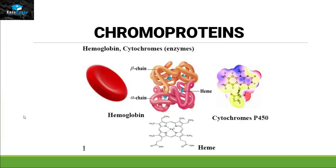Chromoprotein: chromoproteins are proteins where a non-protein part — usually called a prosthetic group — attaches itself to a protein and changes its color. Again, the perfect example is hemoglobin, because the attachment of iron to this protein gives the red color to our blood cells.